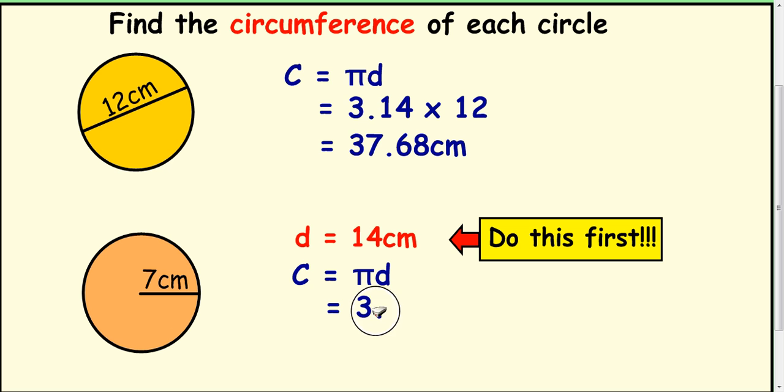So again, circumference is equal to 3.14 times the diameter of 14. Take that into your calculator and get 43.96 centimeters.